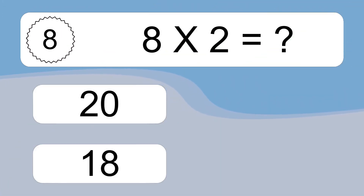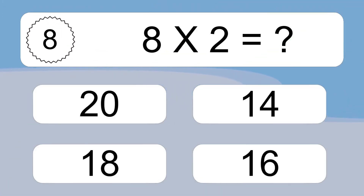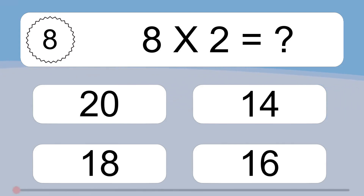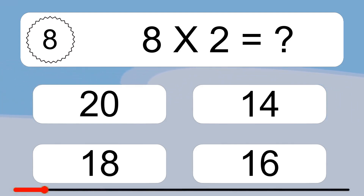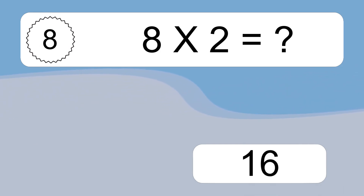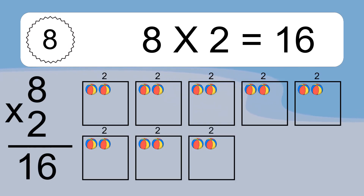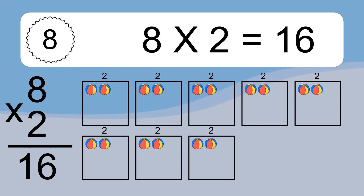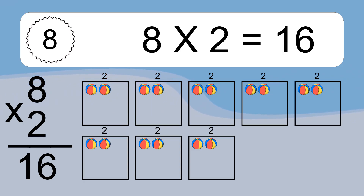8 times 2 equals what? 8 times 2 equals 16. We have 8 boxes, and each box has 2 colorful balls inside. If you count all the balls in all the boxes together, you will have 8 times 2 balls. This equals 16 balls.